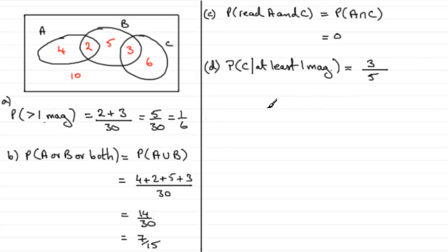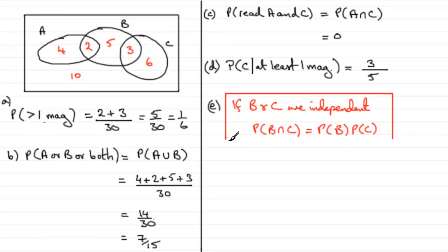And in the last part, E, we've got to show that B and C are independent events. Now, we should know a basic rule. And that is that if B and C are independent, then we would expect the probability of B and C to equal the probability of B multiplied by the probability of C. So this is a basic rule that I'm going to work with in order to prove if B and C are independent or not independent.